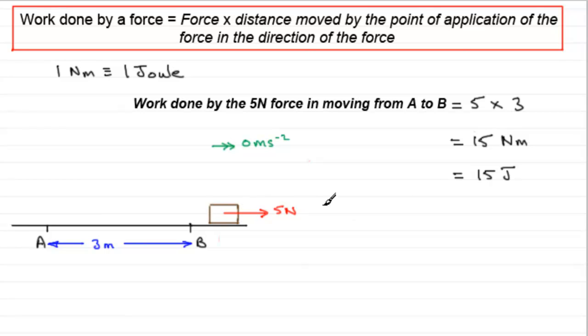But the five newton force isn't the only force that acts on this particle. I mean, you've got the weight for instance. Let's just put that in. That would act downwards, let's say W newtons. You've got a contact force acting upwards, let's say that is R newtons. What about the work done by the force W newtons, the weight?